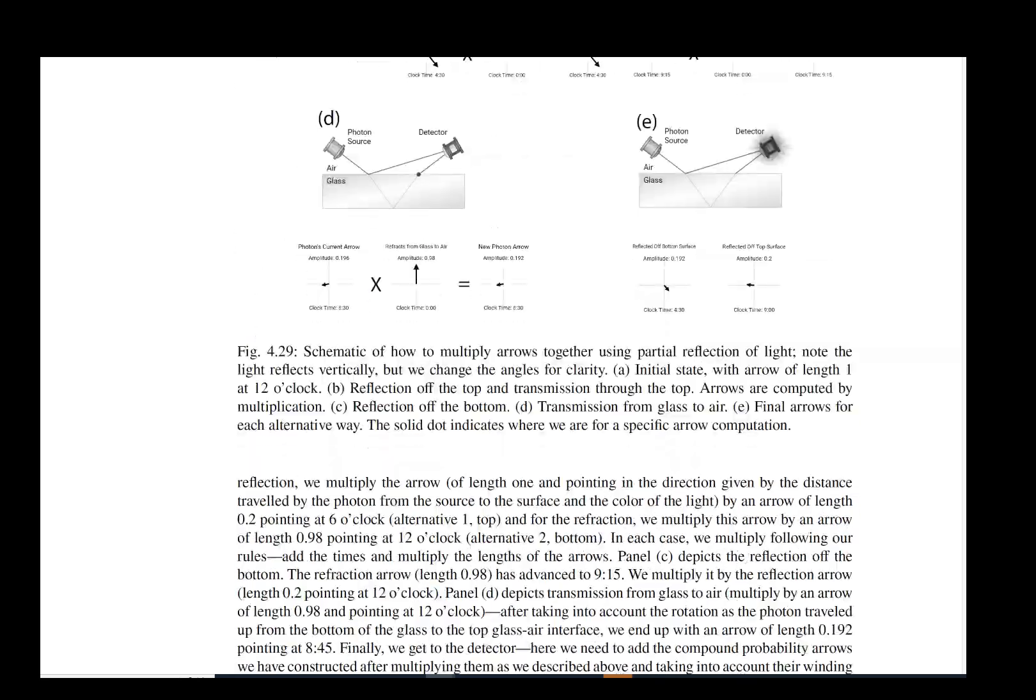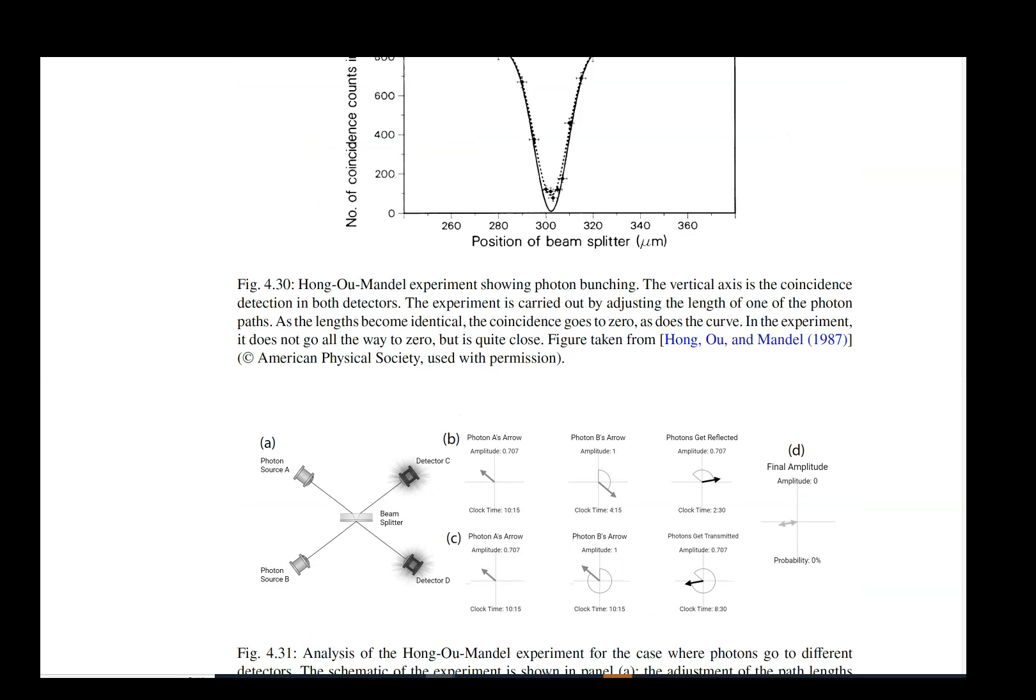To get the Hong-Ou-Mandel effect, what you do is you have an experiment shown in this bottom panel where you have two sources of light going onto a beam splitter and you have two detectors. The question is do I see the light going into one detector only or do I see the light going into both detectors? This dip shows that you see the light going into only one detector, not in both detectors, when you get the two photons to completely align with each other and be identical photons going through your device.